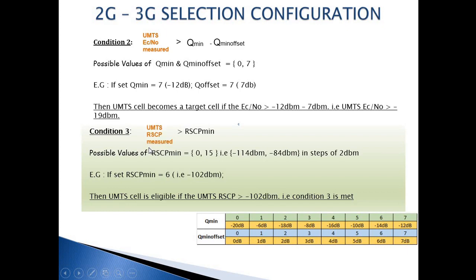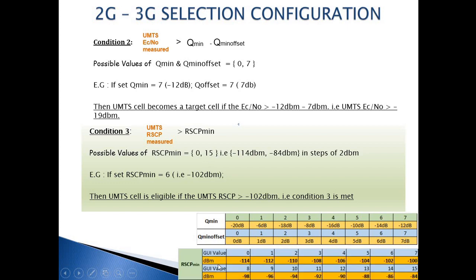Now we look at the third condition: the UMTS RSCP value of the neighboring cell must be greater than an RSCP min. We could set a value from 0 to 15, where 0 corresponds to minus 114 dBm and 15 corresponds to minus 84 dBm. If we set an RSCP min value of 6, which corresponds to minus 102 dBm, it implies that the 3G neighboring cell can be selected if its measured RSCP value is greater than minus 102 dBm.